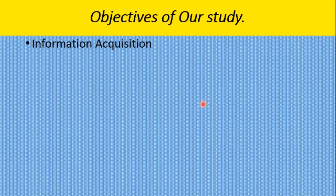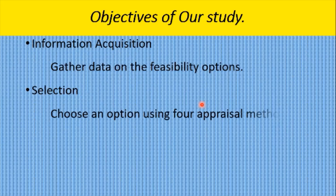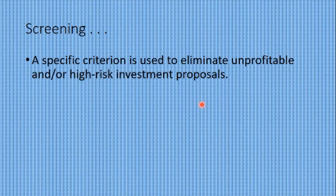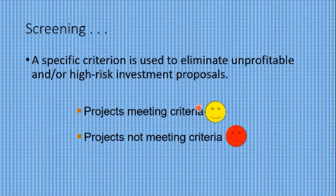We'll be looking at information acquisition, the gathering of data on the feasibility studies, and the selection of the project. We will use four appraisal methods for selecting. In screening or selecting, a specific criteria is used to eliminate unprofitable and high-risk investment proposals. Projects meeting the criteria would be accepted, and projects not meeting the criteria would be rejected.